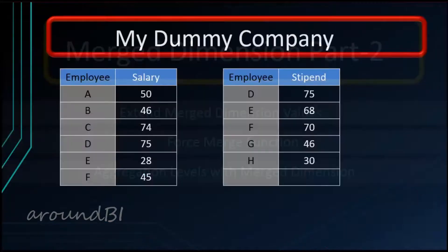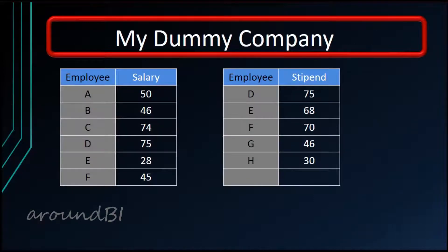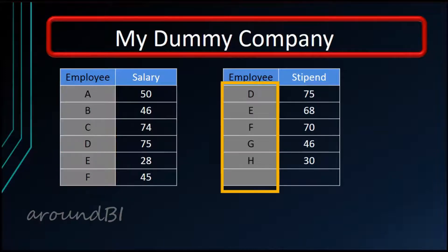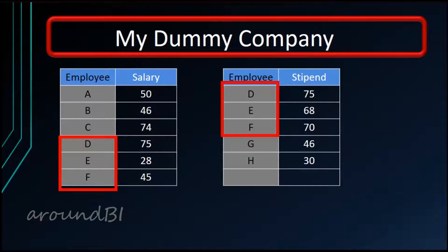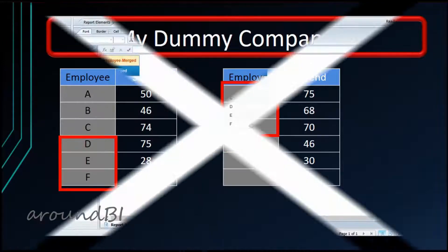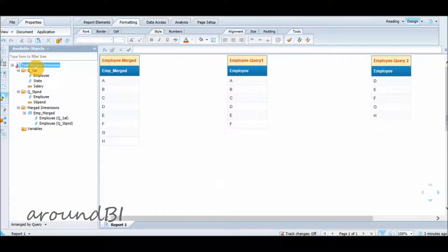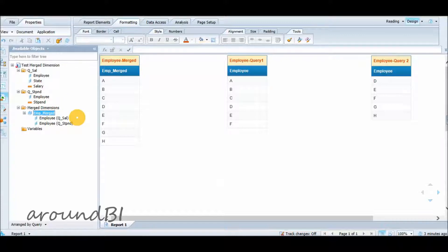We will use a simple sample example for a company that pays salary and stipend to its employees. Employees A to F are getting salary, and employees D to H are getting stipend. Employees D, E, and F are getting both salary and stipend. We have our test report that has two queries — Query1 for salary and Query2 for stipend. On the report side, we have created a Merge Dimension on employee called EMP Merged.